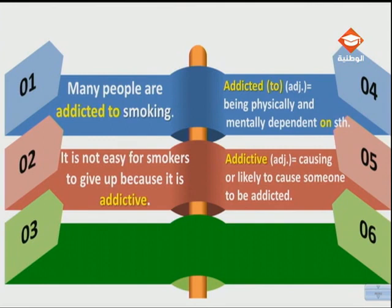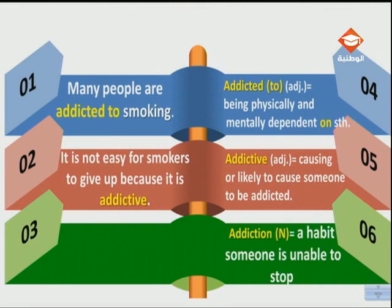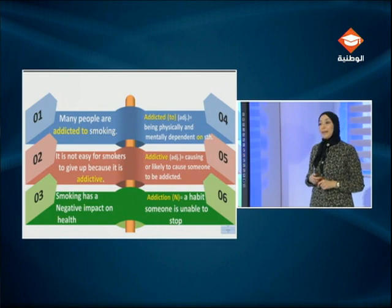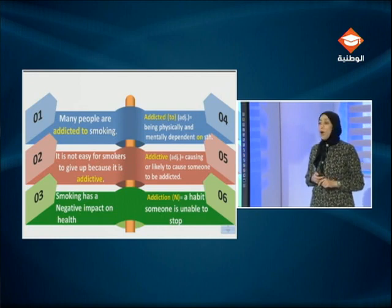Someone is addicted to something — he is dependent on it — because what he is consuming or the habit he is following is addictive. We can say he is hooked on it. Smoking is a habit — a nasty habit. An addiction is a habit that people are unable to stop once they start. We could say 'quit' instead of 'stop.' Smoking has a negative impact on health, so let's remind smokers of these effects, give them some advice on how to quit, and tell them of the benefits of quitting.